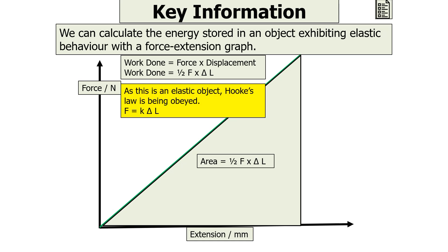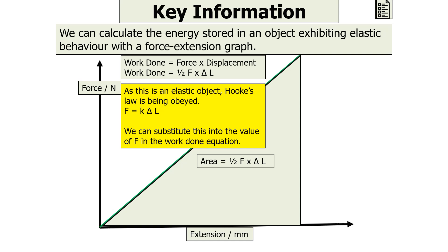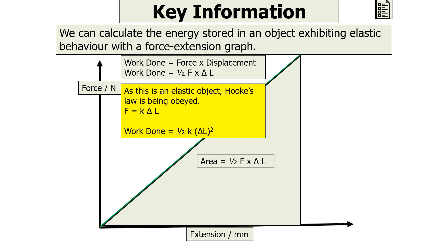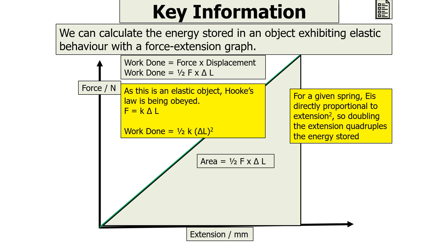Work done is half F times by extension, or delta L. As this is an elastic object, we know that Hooke's Law is being obeyed, and Hooke's Law states F equals K times by delta L, times by extension. We can then substitute this value of F into the work done equation, giving us: work done equals half K times by extension squared. This indicates that for a given spring, energy is directly proportional to the extension squared.